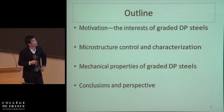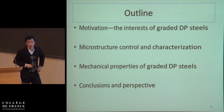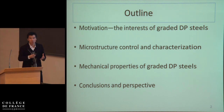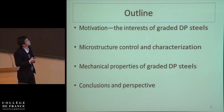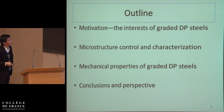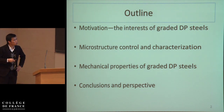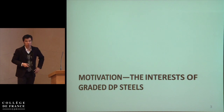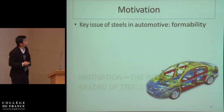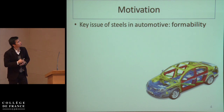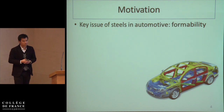Here is the outline of my presentation. First I will introduce why we are interested in graded DP steel, then I will present results on microstructure and mechanical properties, and finally conclusions and perspectives will be drawn. The motivation: we are interested in steel for making cars and the key issue is formability.